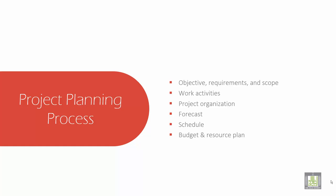So what is this project planning process? It is an objective that talks about the requirements and scope, and then it talks about the work activities — what work is to be done.